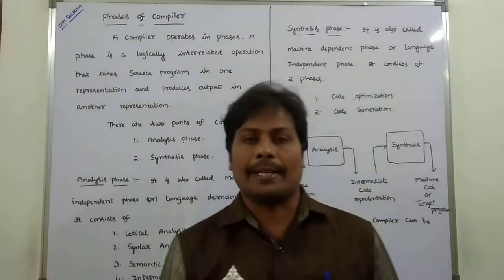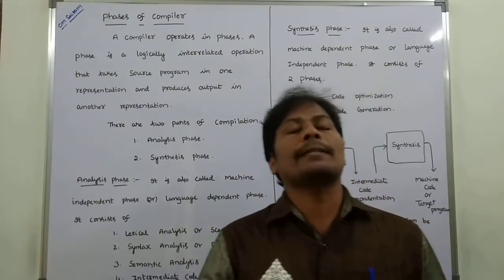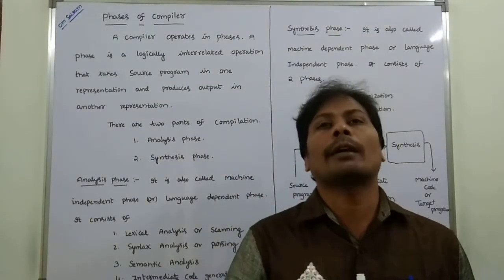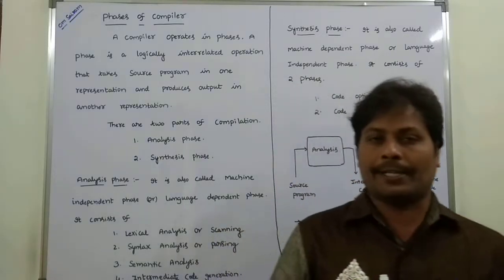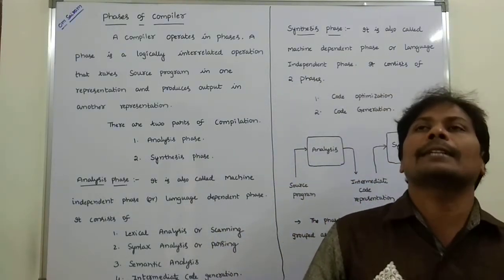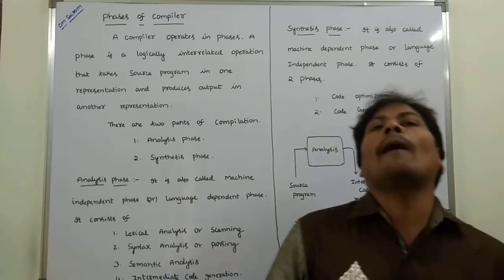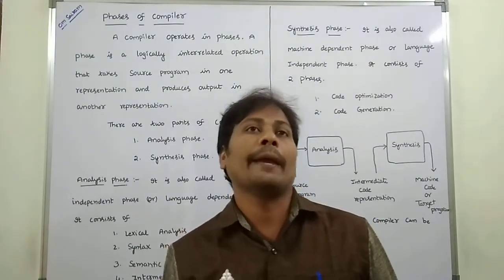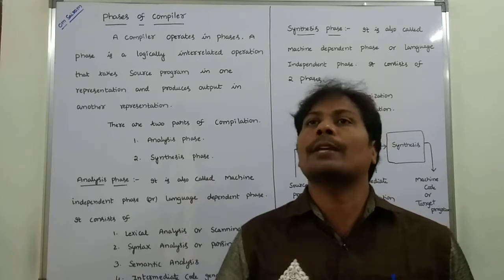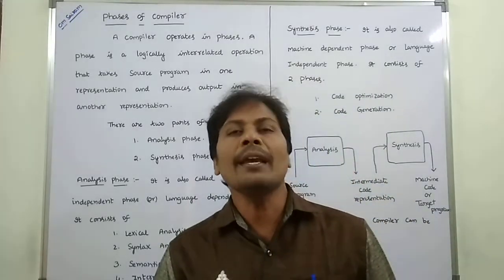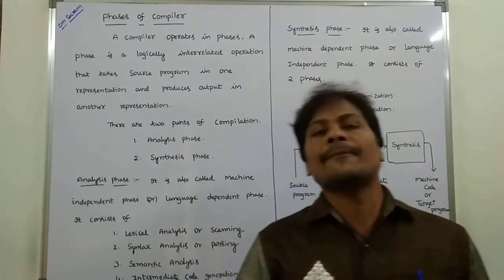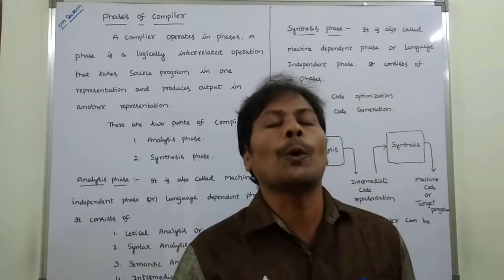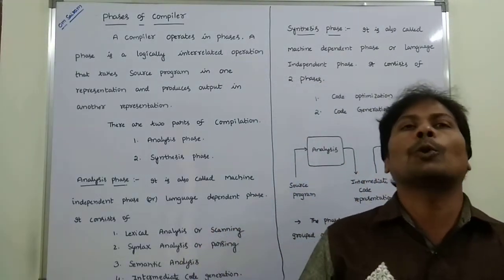The second one is synthesis phase. The synthesis phase is also called as machine-dependent phase or language-independent phase. The synthesis phase is independent of the machine on which the program is to be executed, but independent of the language. The synthesis phase mainly consists of two phases: first one is code optimization, second one is code generation.